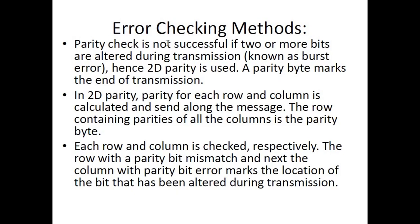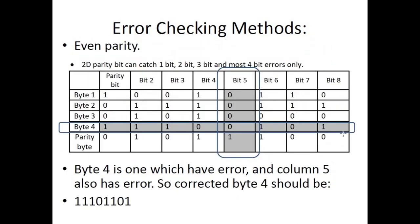Hence 2D parity is used — an advanced form known as two-dimensional parity. A parity byte marks the end of transmission in 2D parity. The parity of each row and column is calculated and sent along with the message. The row containing parities of all the columns is the parity byte. Each row and column is checked respectively, and the row with a parity bit mismatch and the column with a parity bit error mark the location of the bit altered during transmission.